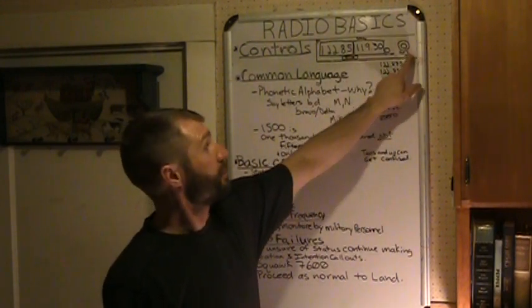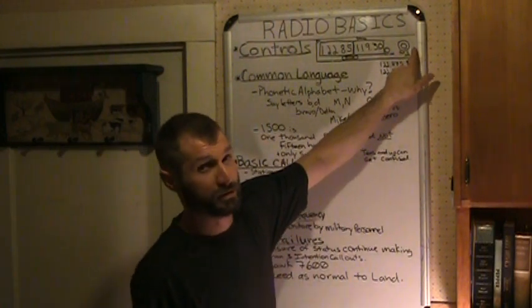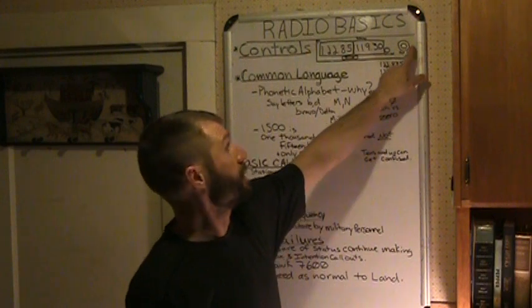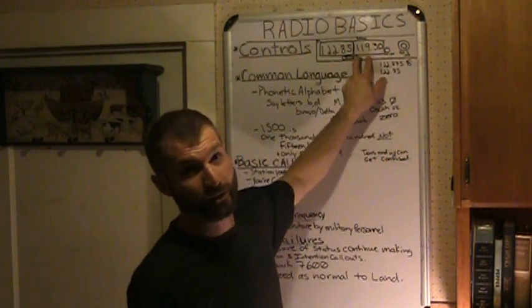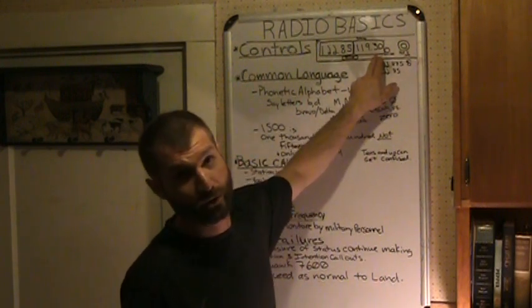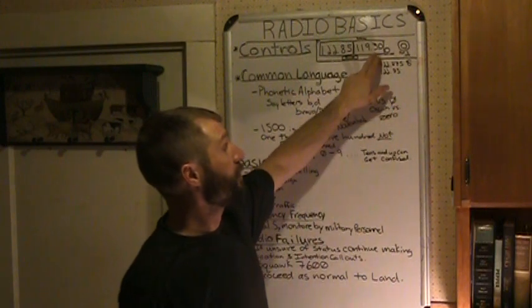What also that allows you to do is whichever is in the standby is the one that you can change. This knob has a larger knob on the outside of a smaller knob. The larger knob will adjust your first three digits, everything to the left of your decimal, and then the smaller knob will adjust the digits to the right of the decimal.